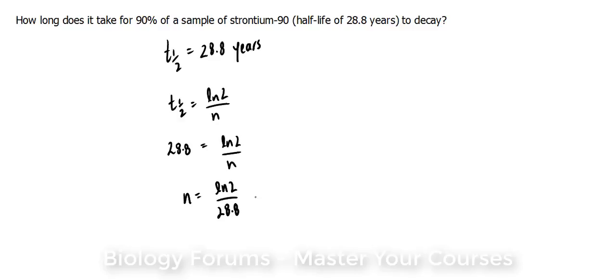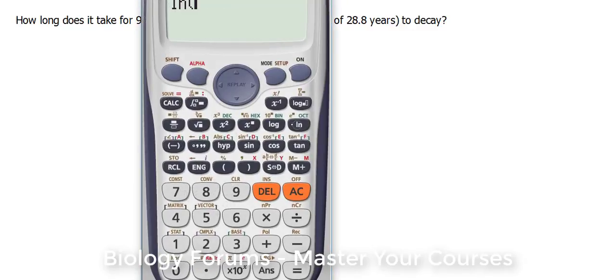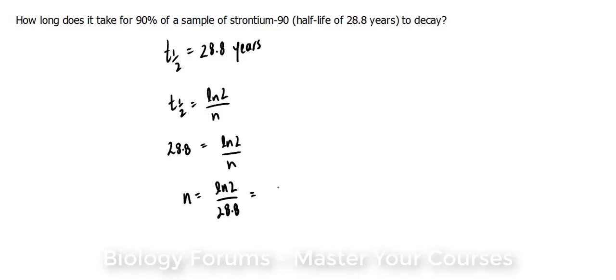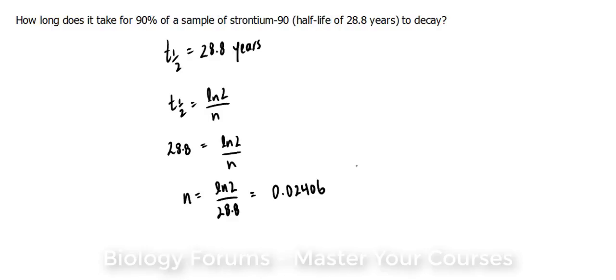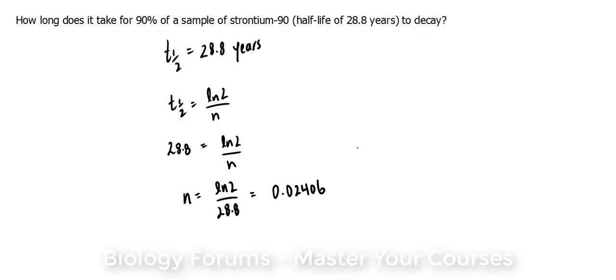We can use our calculator to find out the answer. ln 2 divided by 28.8 gives us 0.02406. Just to double check. That's it.